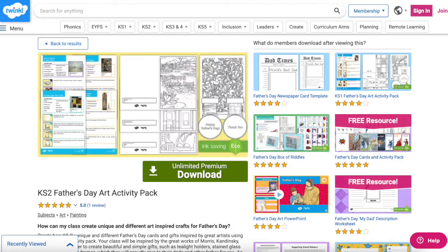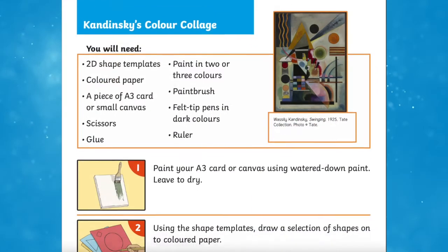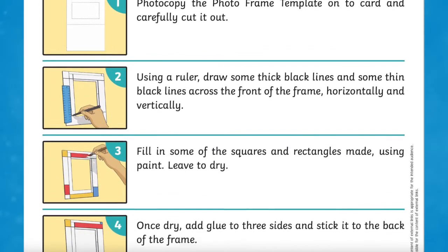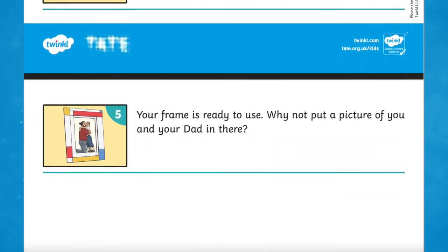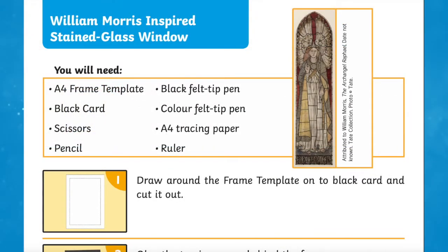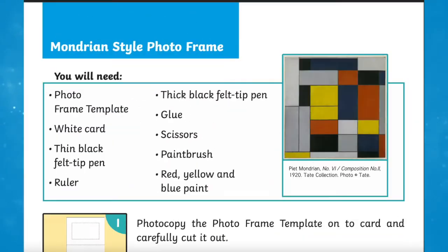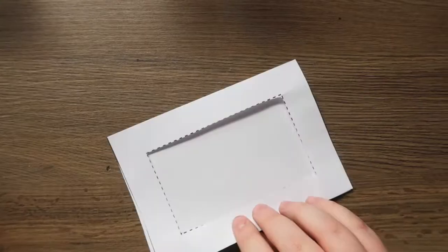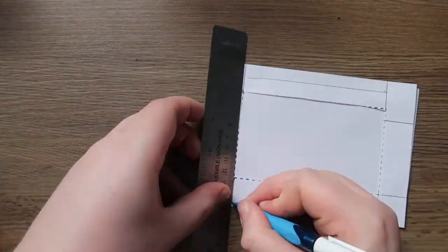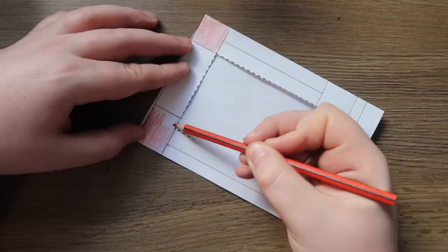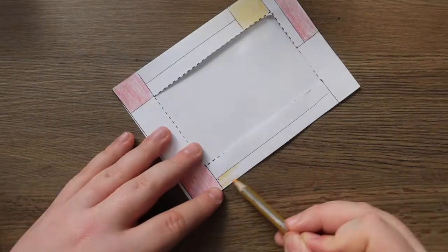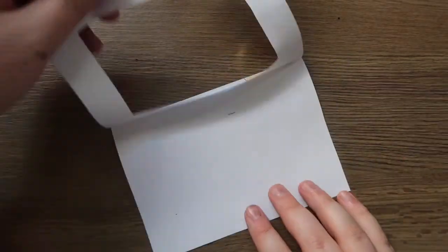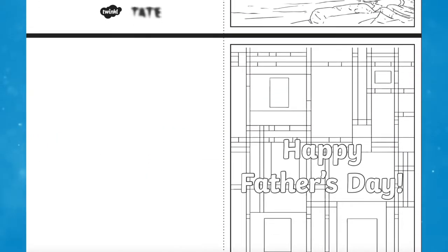Finally, a great follow-on from the PowerPoint would be the Key Stage 2 Father's Day art activity pack. Create beautifully unique and different Father's Day gifts inspired by great artists using this wonderful activity pack. Your class will be inspired by the great works of Kandinsky, Mondrian and Turner to create beautiful and simple gifts such as tea light holders, stained glass windows and photo frames, which they will proudly give to their dads and other father figures. This activity pack also supports children to create their own art-inspired Father's Day cards with a wonderful mindfulness design — a perfect activity pack for a budding artist this Father's Day.